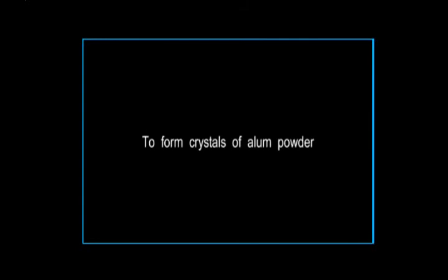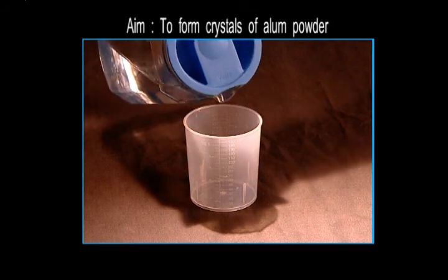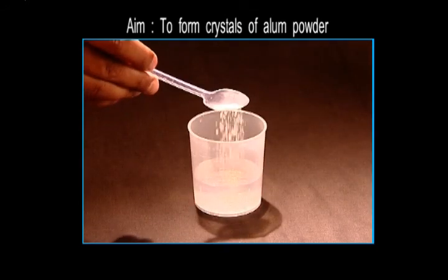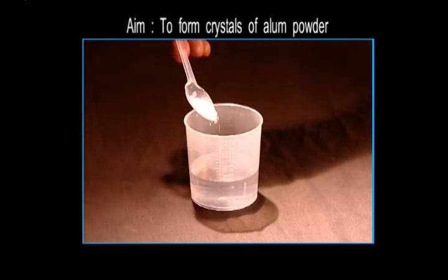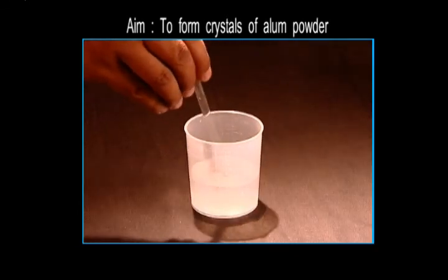To form crystals of alum powder, here's a beaker. We'll pour some water in it. Into this we'll add some alum powder and stir with a glass rod. We will keep adding more and more alum while stirring constantly till alum stops dissolving in the water.